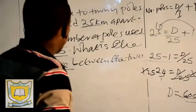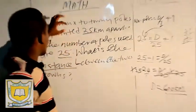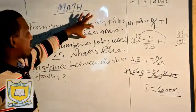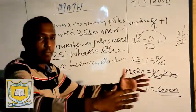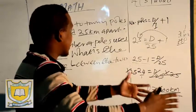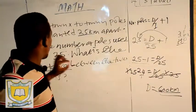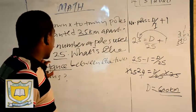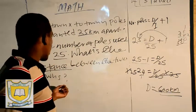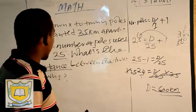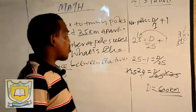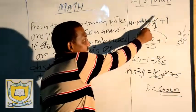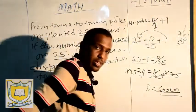I'm repeating. They said town X to town Y, balls are planted 25 km apart — that means interval, the distance in between. The number of balls used are 25. What is the distance between the two towns? We use our formula: number of balls equals distance over interval plus 1. It's not a figure.